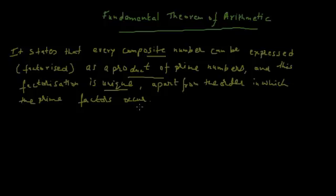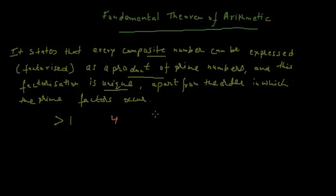Before we proceed, let me remind you what a composite number and a prime number are. A composite number is a positive integer greater than 1 that has at least one factor other than 1 and itself. For example, the number 4: besides the factors 1 and itself (4), it also has the factor 2. So 4 is a composite number.